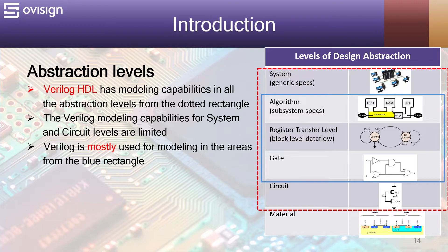Let's analyze how Verilog fits in the abstraction level landscape. Verilog HDL has modeling capabilities in all the abstraction levels from the dotted rectangle. The Verilog modeling capabilities for system and circuit levels are limited. Verilog is mostly used for modeling in the areas from the blue rectangle, which is the algorithm level, the registered transfer level, and the gate level.